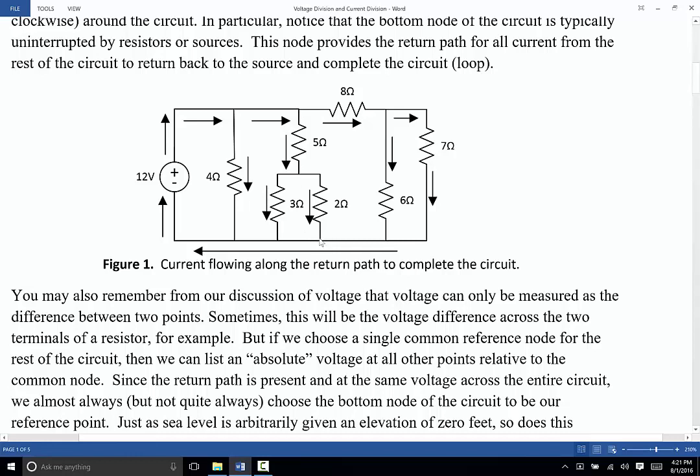But, if you define one node to be the reference node, or the common node that is going to be the reference for all the rest of the circuit, then you can say, you know what, the point to the right of the 8 ohm resistor, that's at this particular voltage. And that would be implicitly compared to the reference node. So, the question is, what do we choose as the reference node?